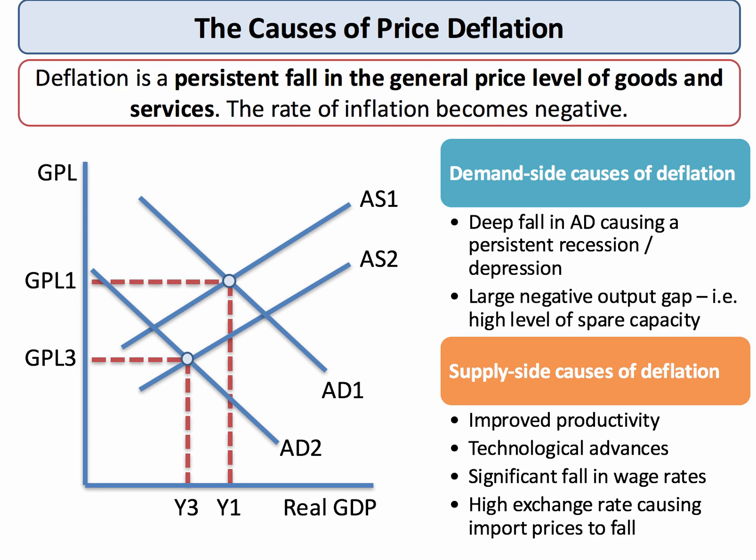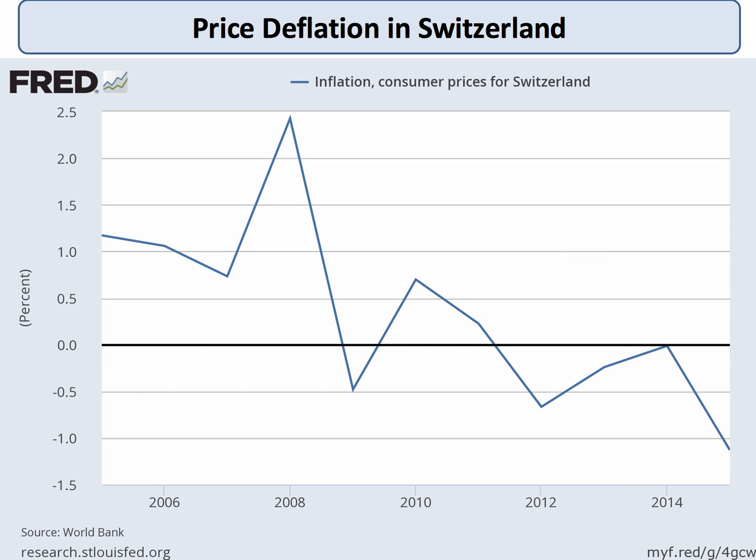Switzerland is another example of a country that has alternated between low inflation and deflation in recent times. There was some deflation in 2009, again in 2012, and again in 2015. One of the factors causing that has been the appreciating currency — the Swiss franc has significantly appreciated against the euro, feeding through to lower import prices into Switzerland.